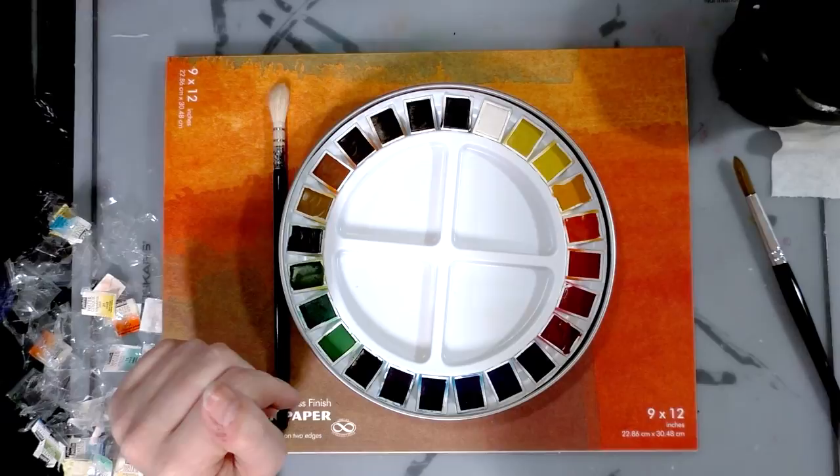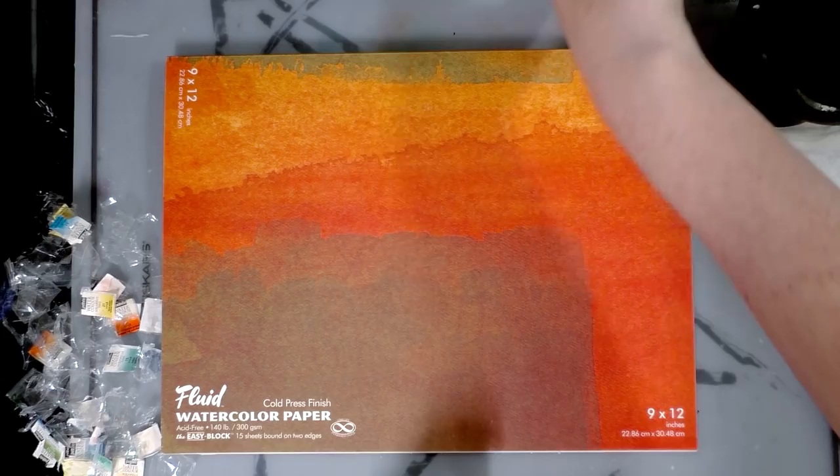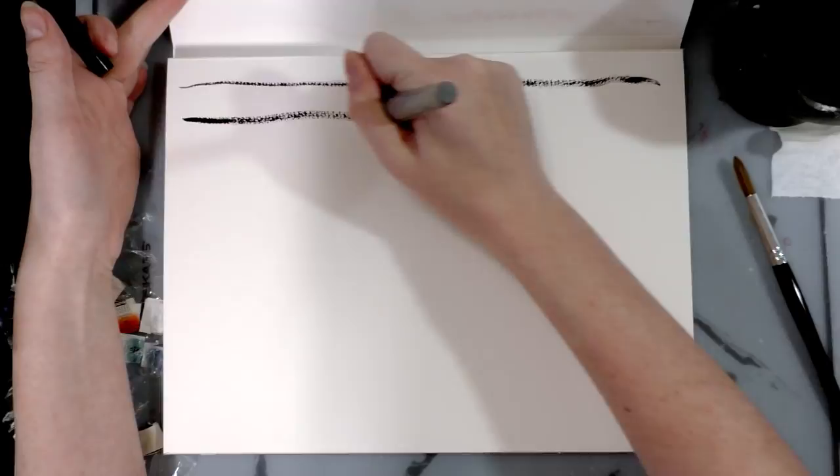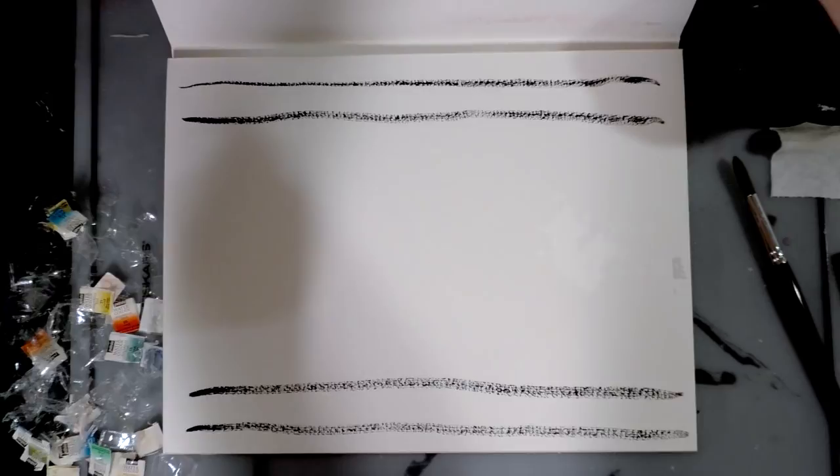First thing I want to do is I want to take a waterproof pen, this is a Pentel pigment brush pen, and do a couple opacity test lines at the top and at the bottom. I'm going to give those about five to ten minutes to cure.